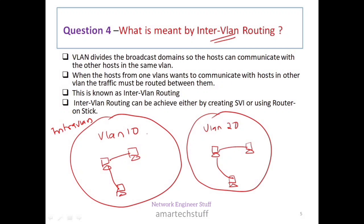When a user in VLAN 10 wants to communicate with a user in VLAN 20, that requires inter-VLAN routing. Traffic within a VLAN is switched; traffic between VLANs is routed. Inter-VLAN routing can be achieved by creating an SVI (Switched Virtual Interface) or by using Router-on-a-Stick. A separate video on that topic is linked in the description.